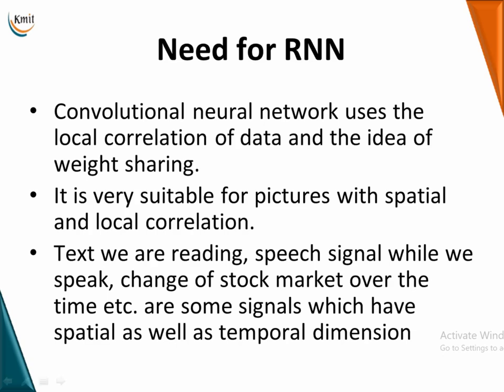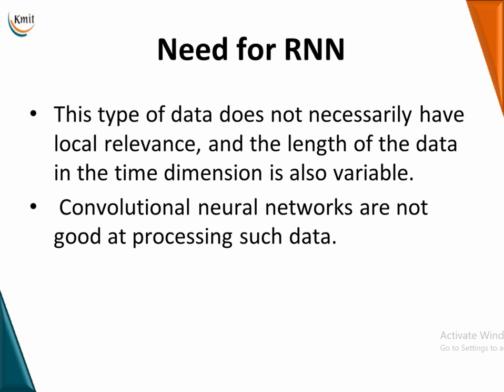Convolutional networks use local correlation for image data and include the idea of weight sharing, making them very suitable for data with pictures or images that require spatial and local correlation. But when we have textual data, speech signals, or predictions like stock market changes over time — temporal data with both spatial and temporal dimensions — we require something different. The temporal data does not necessarily have local relevance, and moreover the length of data in the time dimension is variable. That's why CNNs are not good at processing such data, and that led to the need for RNN.